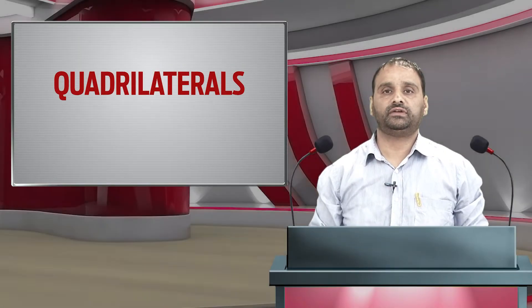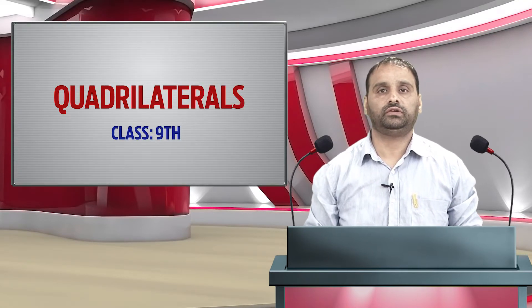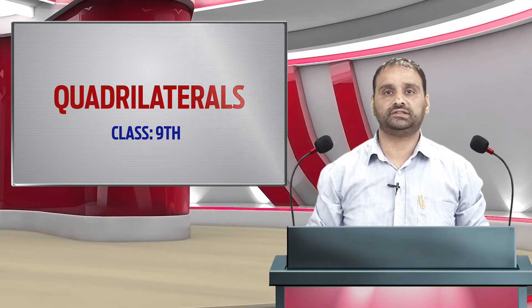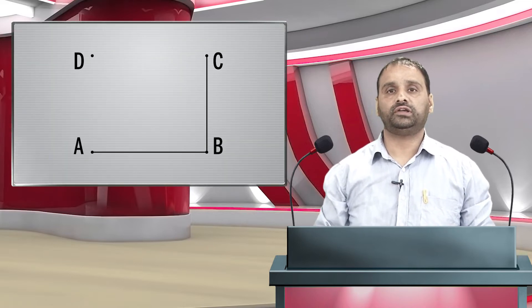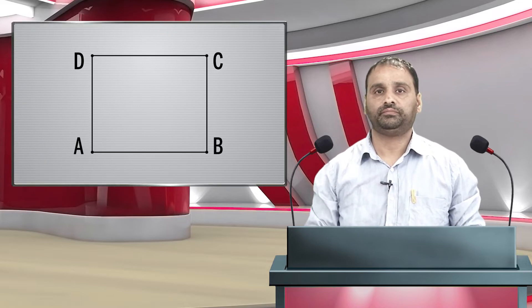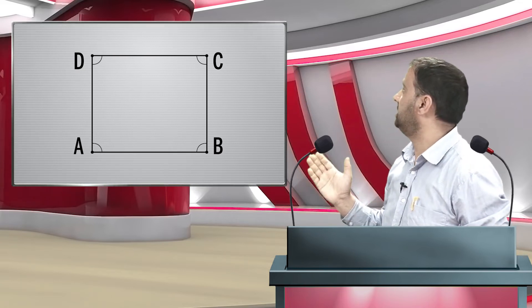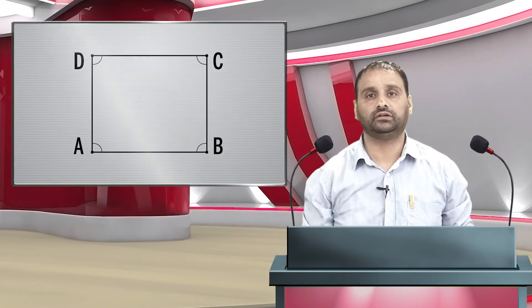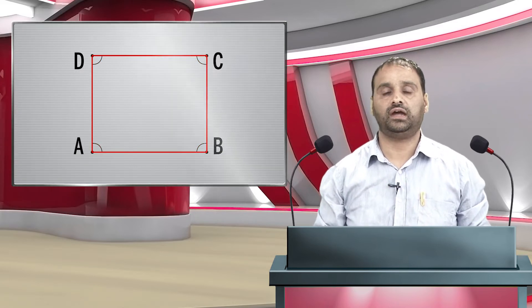Welcome to the mathematics class for 9th grade. Today our topic is quadrilateral. If we take any four points such that no three points are collinear — that is, no three points out of four should lie in a straight line — and when these four points are joined in an order, it forms a figure called a quadrilateral. A quadrilateral is an enclosed four-sided figure which has four angles, four vertices, four sides, and two diagonals.